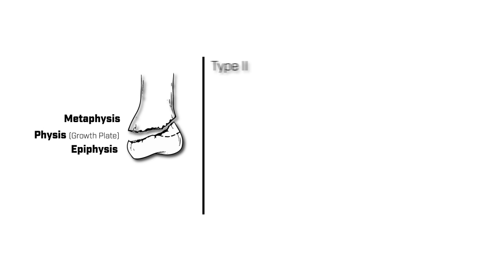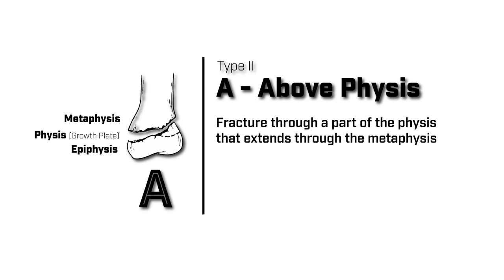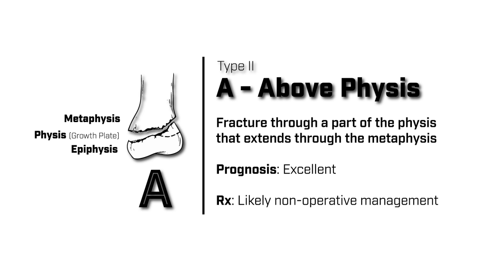A type 2 Salter-Harris fracture is a fracture that goes through the growth plate into the metaphysis. The second letter in Salter is an A, which stands for above the physis, because the fracture extends above the growth plate and into the metaphysis. Prognosis for this type of fracture is excellent, and the fracture can at times be managed non-operatively.